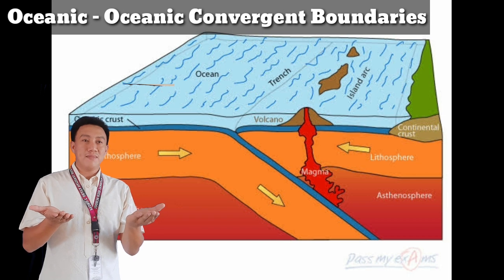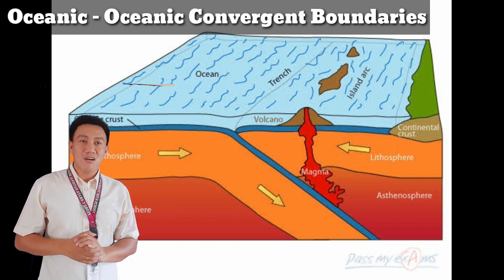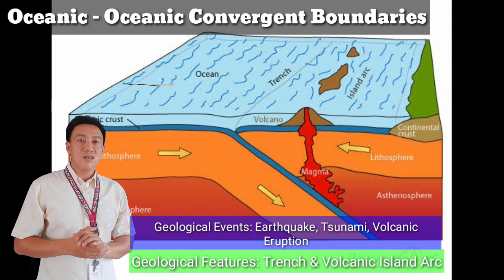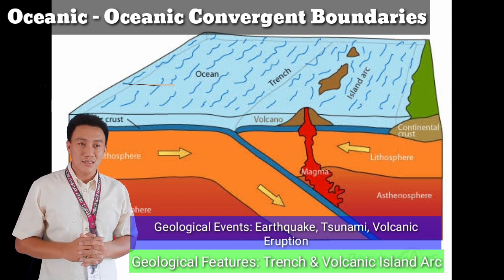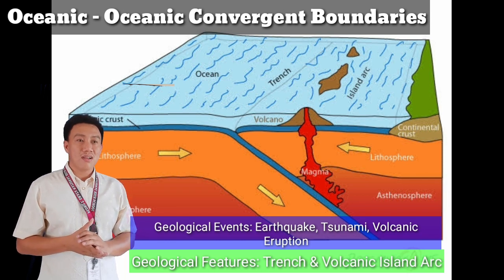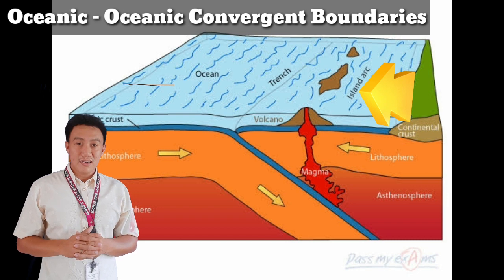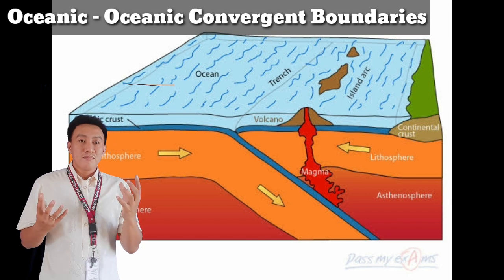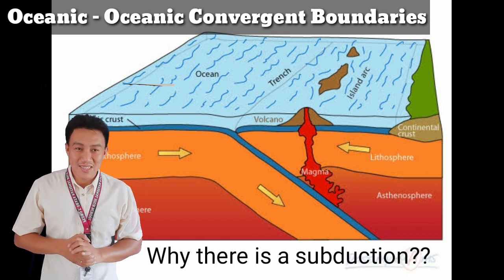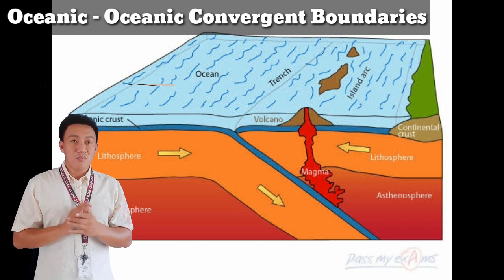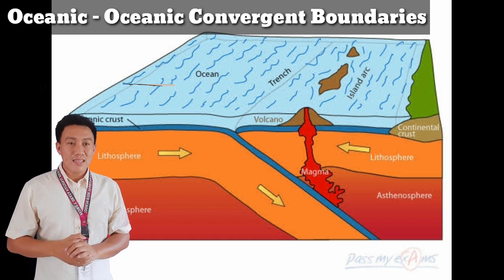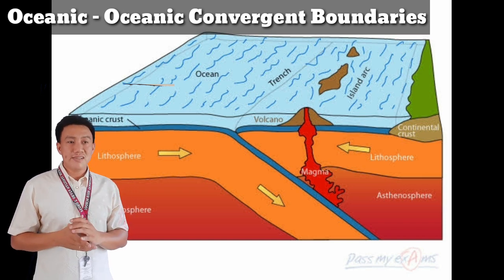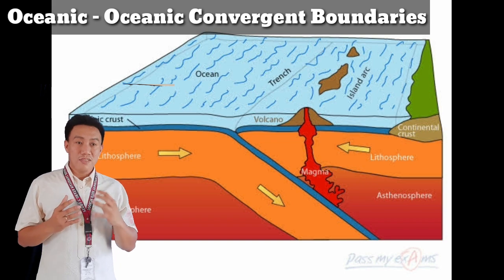In the converging of two oceanic plates, it is almost the same as the converging of oceanic and continental plates — they have the same geological events. But for the geological feature, there is a trench because of subduction, but instead of a volcanic arc, it will form a volcanic island arc. You may wonder why there is subduction when both are oceanic plates. The reason is that even though both have basaltic rock, it depends on the amount of basaltic content.